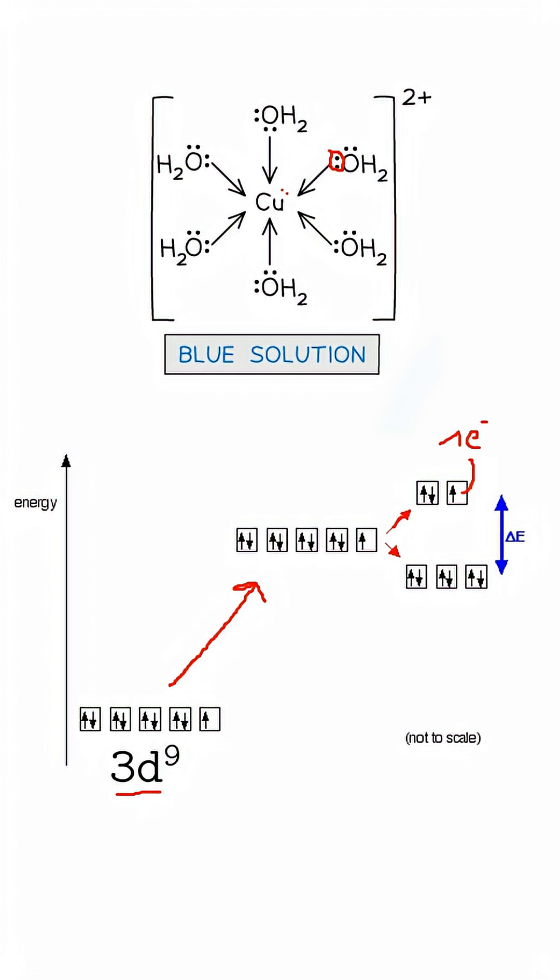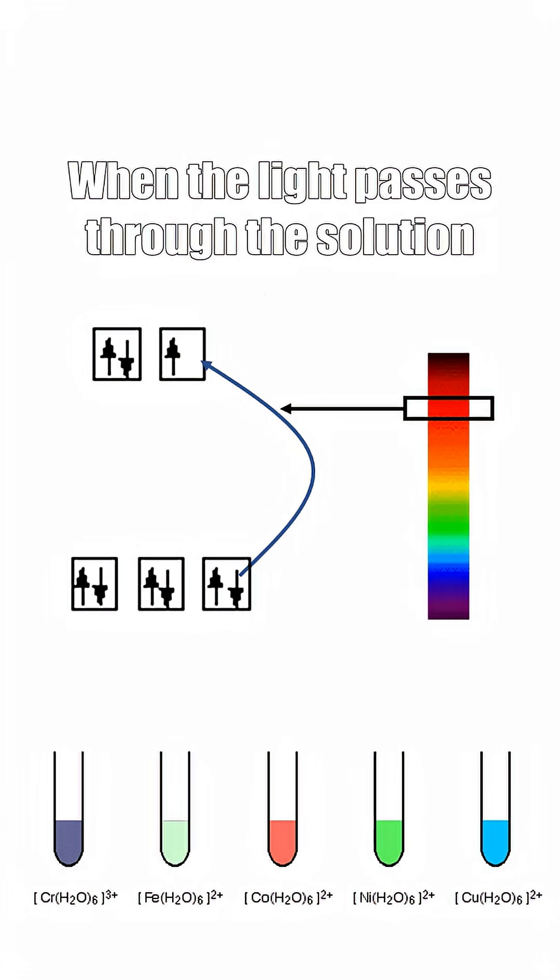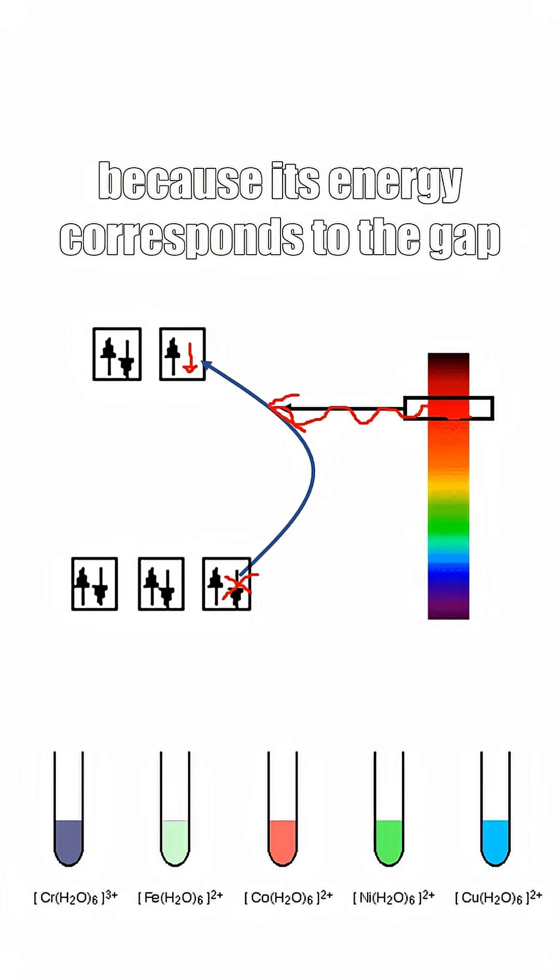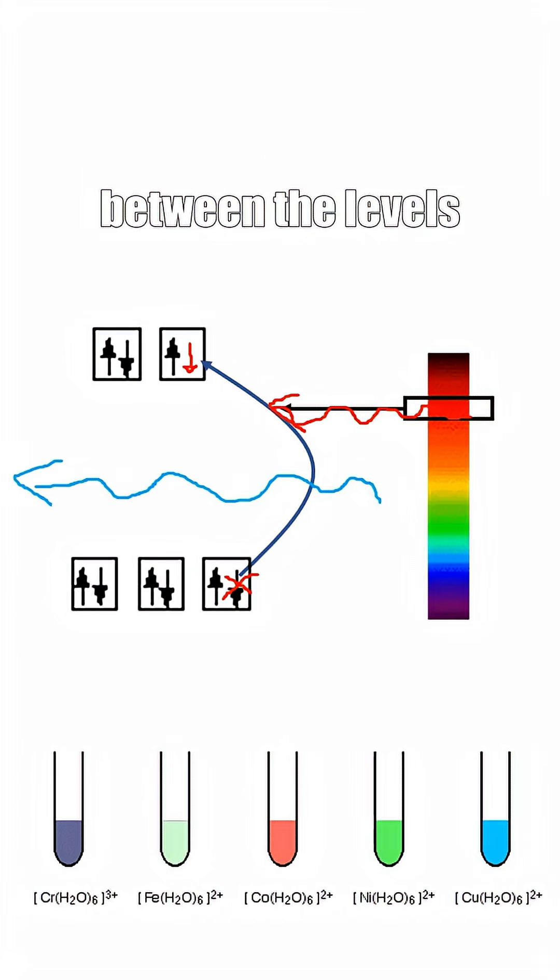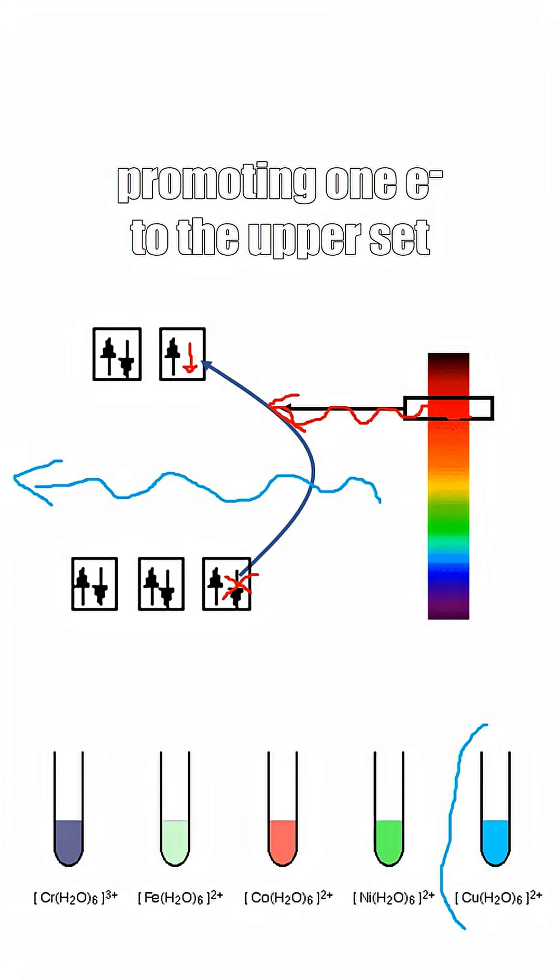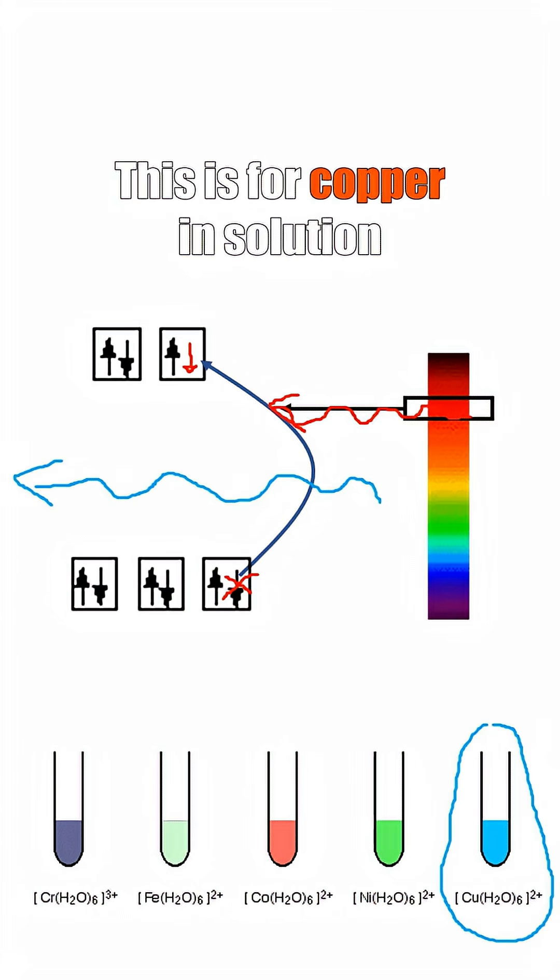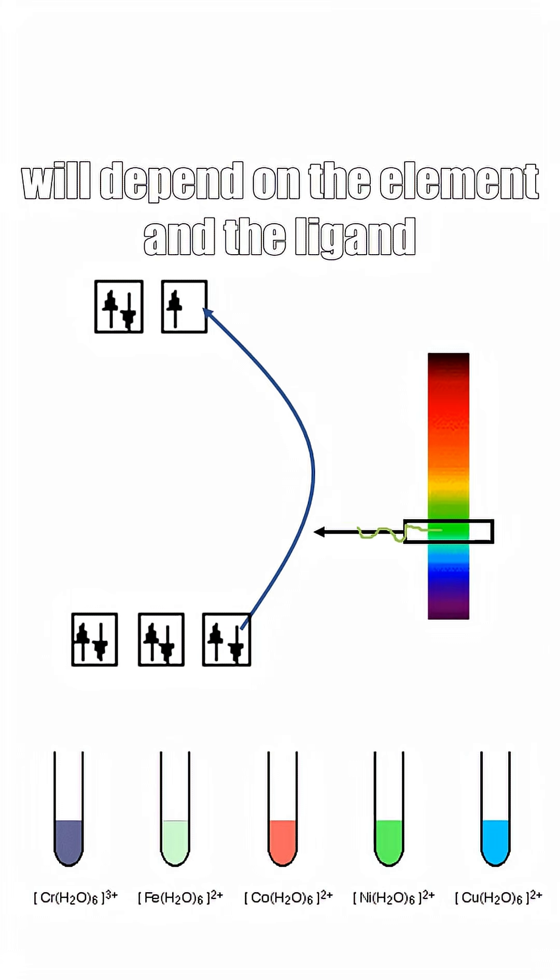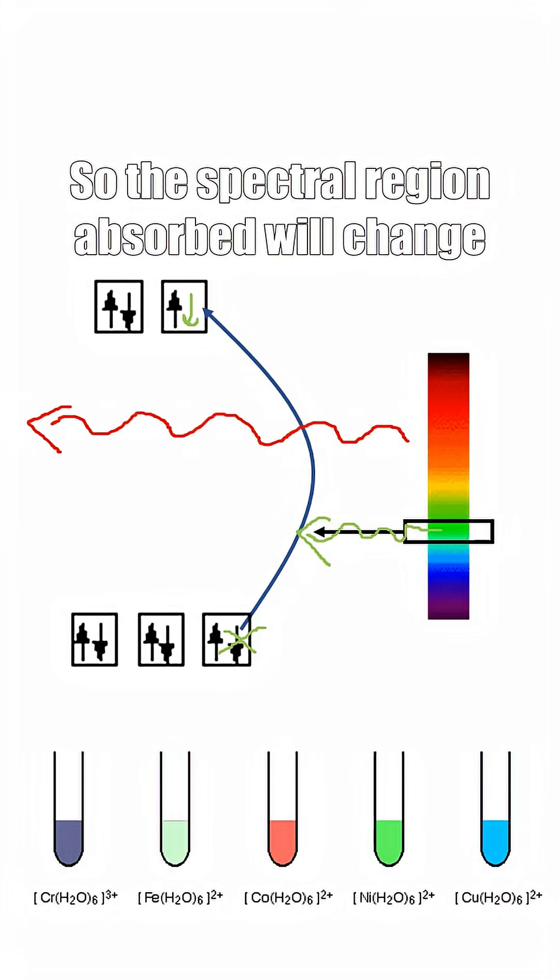Here, each black arrow represents one electron. When light passes through the solution, the red light is absorbed because its energy corresponds to the gap between the levels, promoting one electron to the other set. This is for copper in solution, but the gap between the D orbitals will depend on the element and the ligand, so the spectral region absorbed will change.